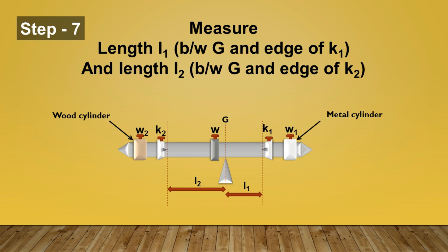Now take this Kater's pendulum out from its stand and balance it on a wedge. By balancing, you will get its center of gravity. Now you can measure the distance L1 and L2 which is the distance between center of gravity and edge of knife K1 and L2 is the difference between center of gravity and edge of knife K2.